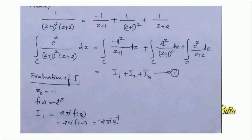Multiplying both sides by e^z and integrating over C, the given integral over C of e^z by (z+1)²(z+2) dz equals: the integral over C of −e^z/(z+1) dz, plus the integral over C of e^z/(z+1)² dz, plus the integral over C of e^z/(z+2) dz. Let these three integrals be I₁, I₂, and I₃ respectively.